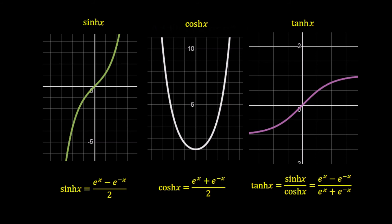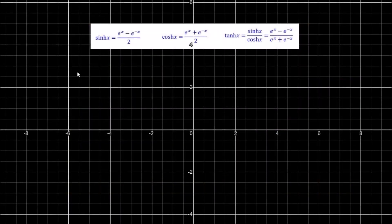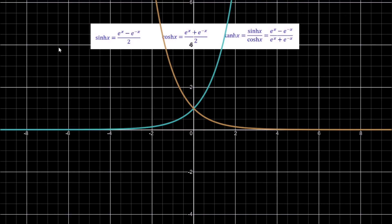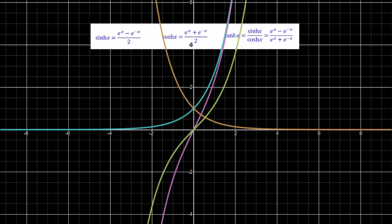In the next video we'll look at the inverses of these functions. Starting with sinh x: we plot e^x and e^(−x), subtract one from the other, then divide by 2. This gives the function in green — the sinh function. Plotting the sinh function directly, you can see it sits right on top of the exponential expression, confirming the identity.